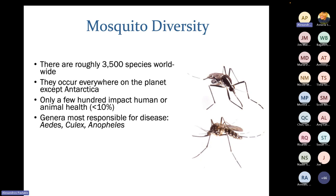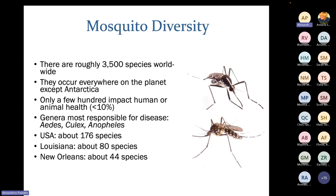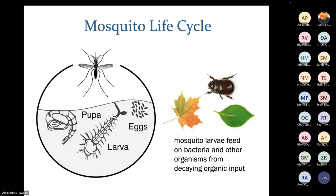Only a few hundred impact human or animal health — that's less than 10% of the overall species. The genera most responsible for transmitting diseases are Aedes, Culex, and Anopheles. In the USA, we have around 176 species. In Louisiana, we have around 80 species of mosquitoes, and in our parish we've seen around 44 different species.